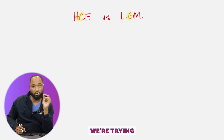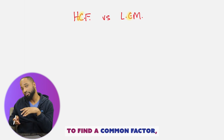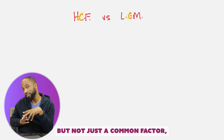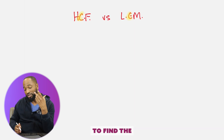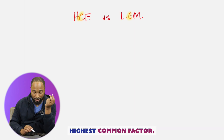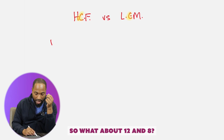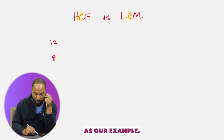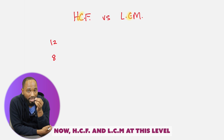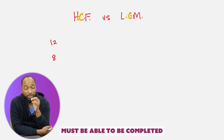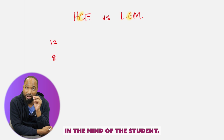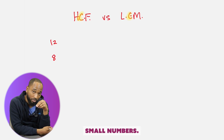With HCF, we're trying to find a common factor, but not just any common factor — you're actually trying to find the highest common factor. So what about 12 and 8? Let's use that as our example. HCF and LCM at this level must be able to be completed in the mind of the student, especially for these small numbers.